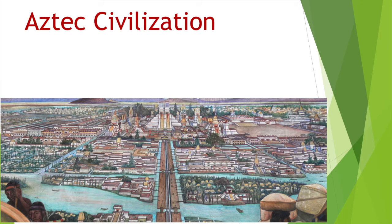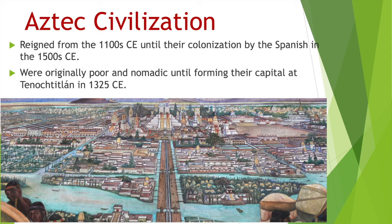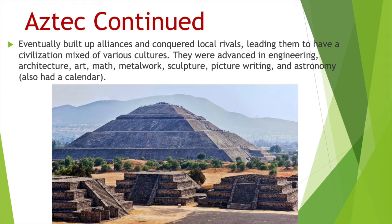The Aztec are perhaps the civilization we're most familiar with. Historians think the capital Tenochtitlan looked like Venice, with canals instead of paved streets. The Aztec reigned from the 1100s until they were colonized by the Spanish in the 1500s. Originally poor and nomadic — meaning they traveled and had no permanent dwellings — they formed their capital at Tenochtitlan in 1325, about 200 years before the Spanish arrived. The Aztecs built alliances and conquered rivals, creating a civilization mixed with various cultures. They were advanced in engineering, architecture, art, math, metalwork, sculpture, picture writing, and astronomy, and they too had a calendar. You can see how large their pyramid is when you realize the little dots going up the right-hand side are people.